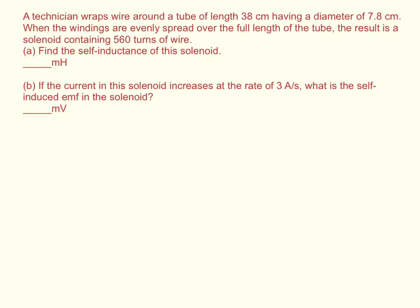A technician wraps wire around a tube of length 38 cm having a diameter of 7.8 cm. When the windings are evenly spread over the full length of the tube, the result is a solenoid containing 560 turns of wire. Find the self-inductance of this solenoid.